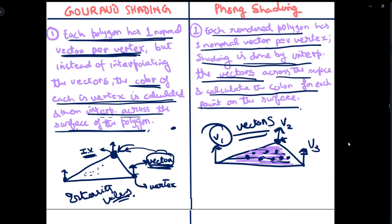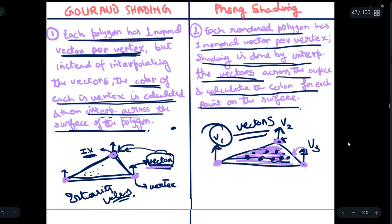These two points form the basis of all other differences between Gouraud shading and Phong shading. In Gouraud shading, we interpolate the intensity values at the vertices, which are found using the vectors. In Phong shading, we interpolate the vectors instead of the intensity values across the surface, and then find out the color values at each point of the surface.